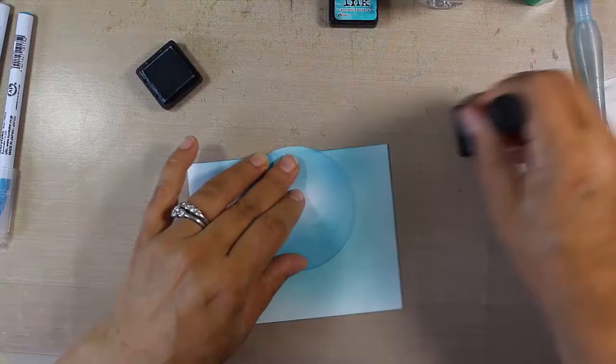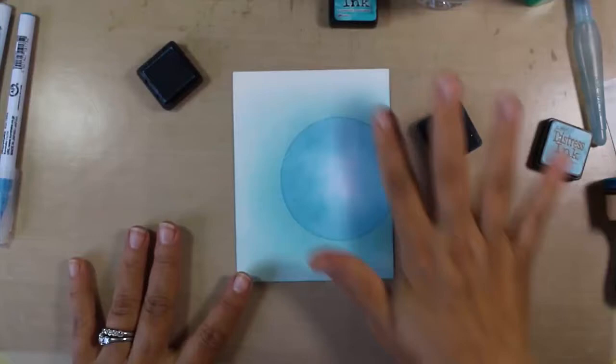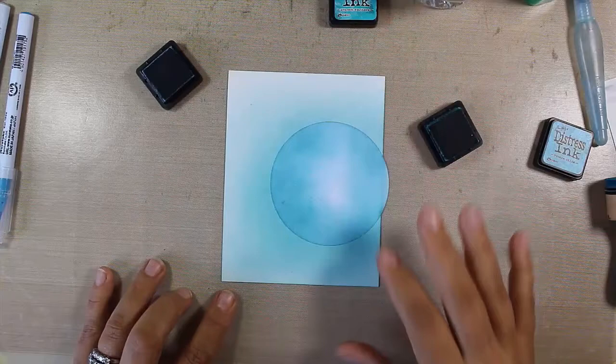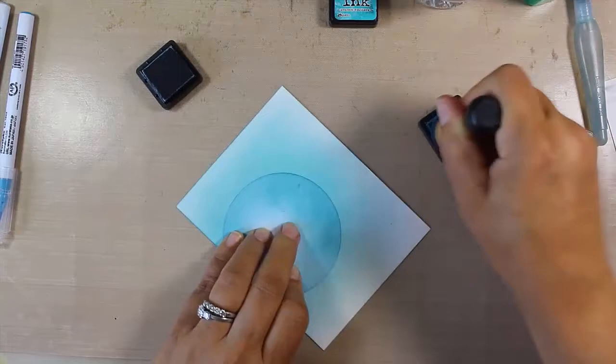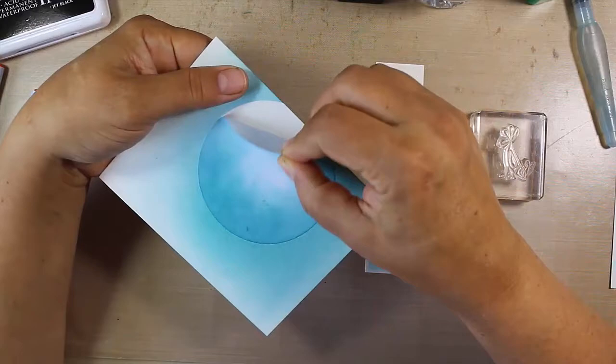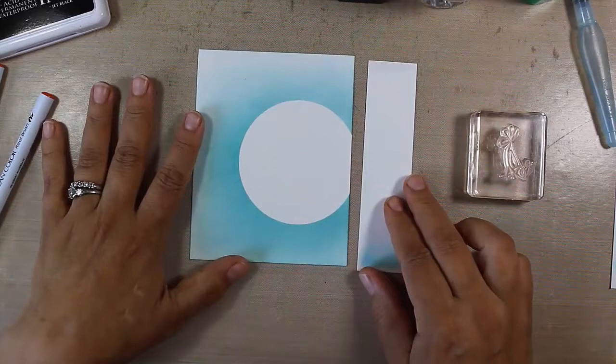You can see here we have a nice dark shade, especially down here, and then much lighter as it radiates outward, almost kind of like the sun but just blue. Now I'm just going to peel away my mask and I can always save this for another time.